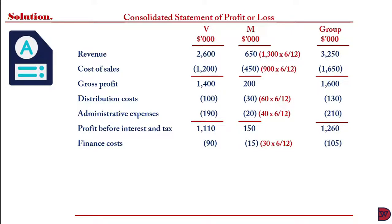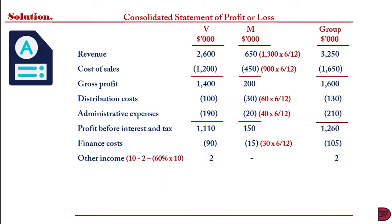For finance costs: $90 for Viki (the parent), $15 for M, and $105 for the group. For other income, the parent had $10. We then deduct $2, which is the interest received on the loan granted to M — this is the intra-group loan interest elimination. Regarding the dividend: M declared a dividend of $10,000, and since Viki holds 60% of its shares, it receives 60% of that dividend, which must be eliminated. After this, the parent is left with $2, representing income from outside the group. There was none for M, so the group total is $2.